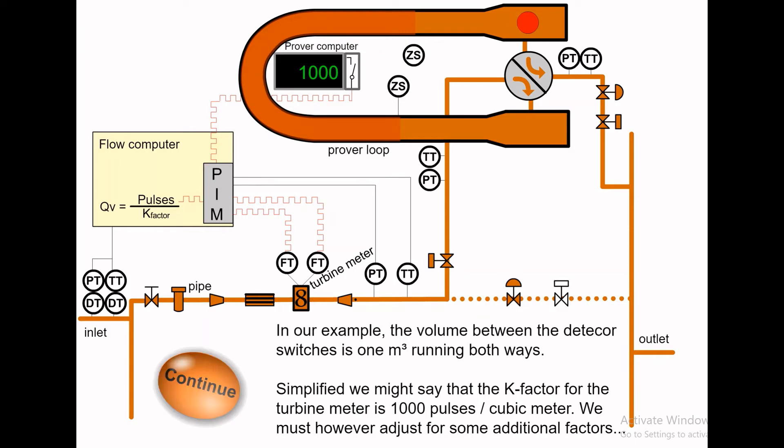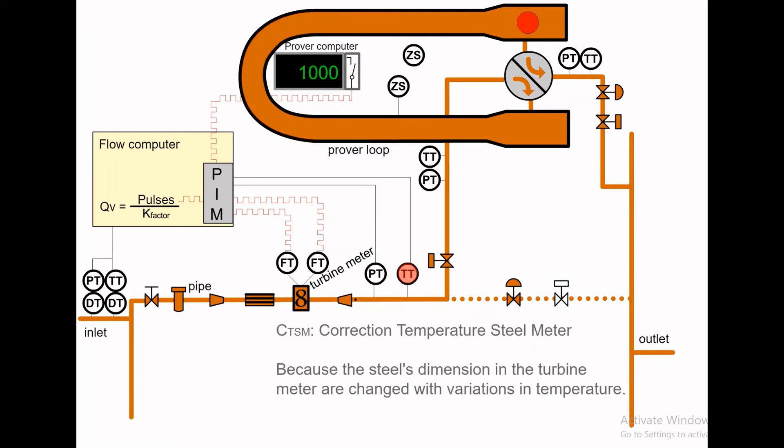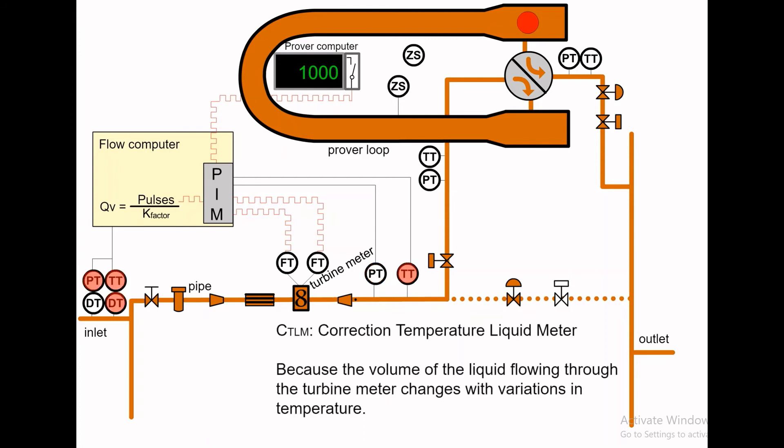We must, however, adjust for some additional factors. CTSM, Correction Temperature Steel Meter, makes the correction required because the steel's dimension in the turbine meter is changed with variations in temperature. CPSM, Correction Pressure Steel Meter, makes the correction required because the steel's dimensions in the turbine meter are changed with variations in pressure.